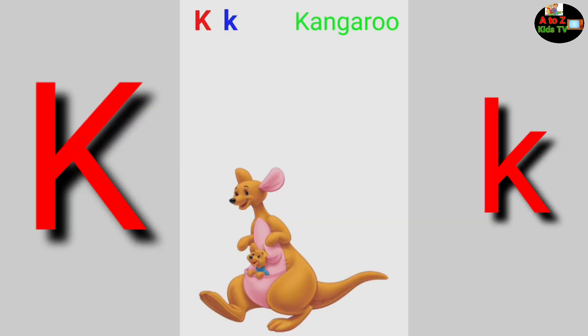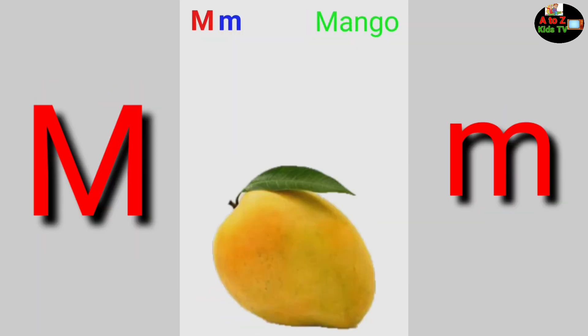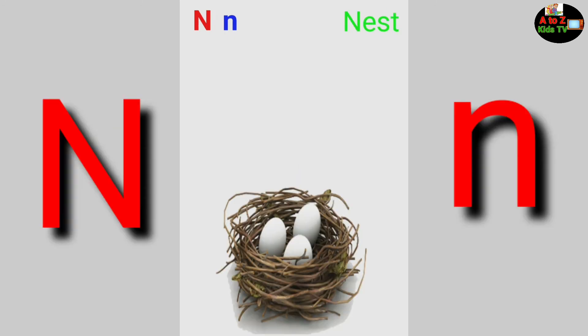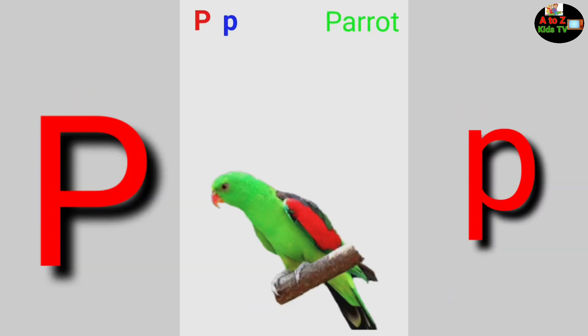K for Kangaroo, L for Lion, M for Mango, N for Nest, O for Orange, P for Parrot.